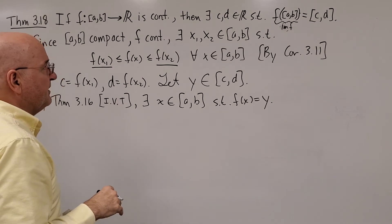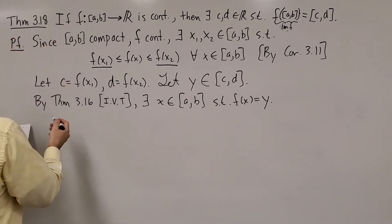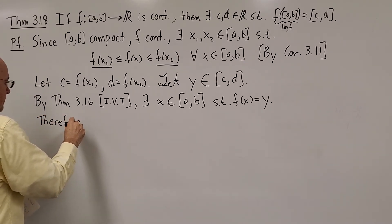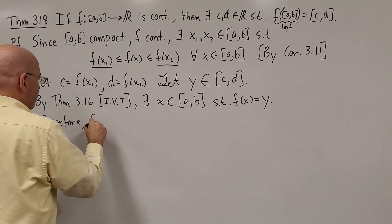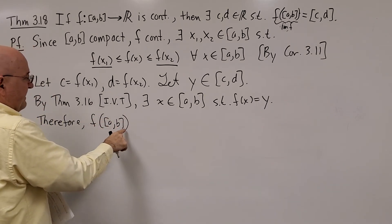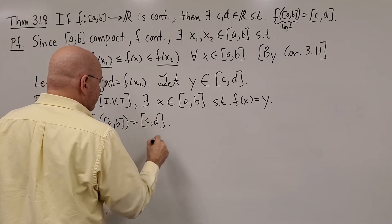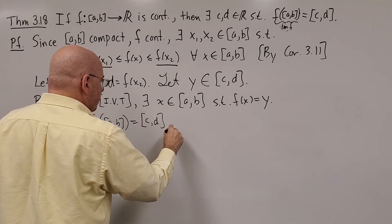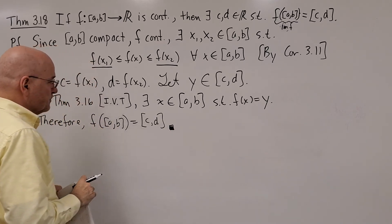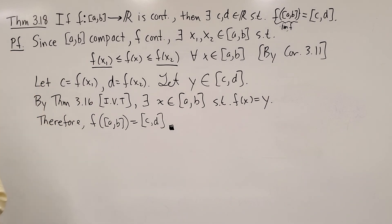So all of the heights would be covered in between C and D. Therefore, F of [A,B], the image of F, is equal to the closed bounded interval from C to D. And next we'll do a couple of examples.